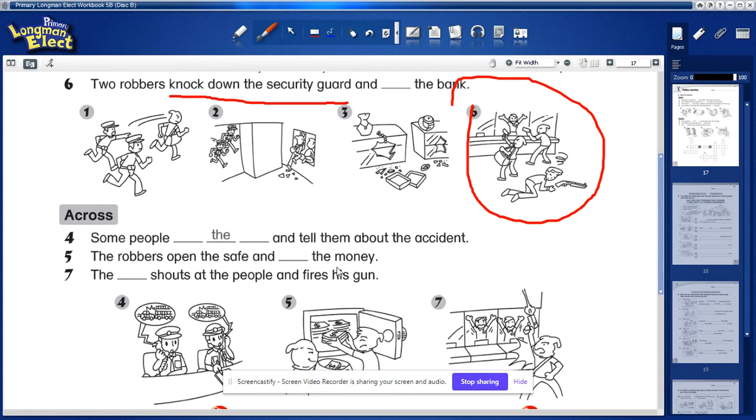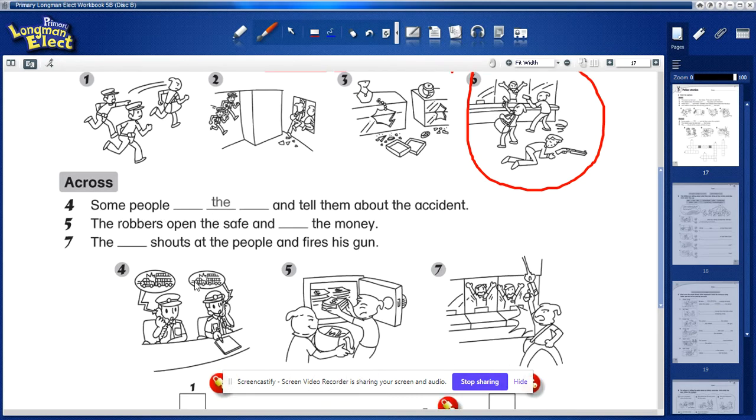Now I'm going to scroll down a bit. We're going to talk about number four. Some people... So this picture is number four. These are the policemen and policewomen, and somebody phoned the police. Oops, I almost gave you the answer. Tell them about the accident. You see the accident, the car hit the bus. So some people, what did they do to tell them about the accident? You can find the words.